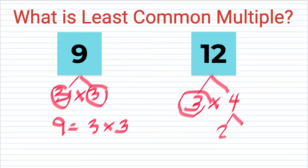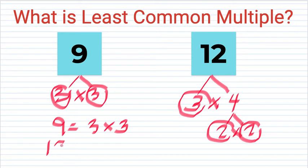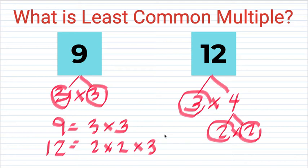Since 3 is prime but 4 is not, we break 4 down into 2 times 2. Both 2s are prime, so the prime factors of 12 are 2 times 2 times 3.